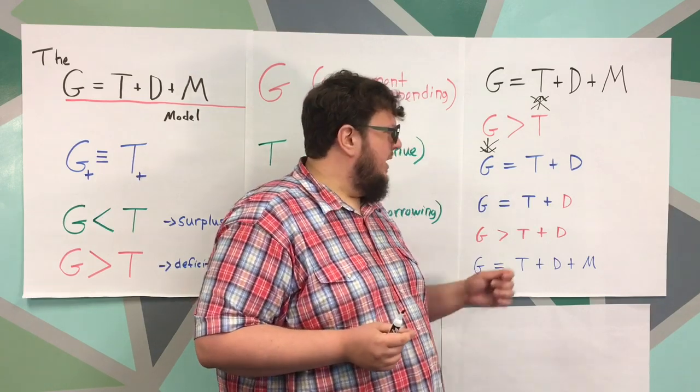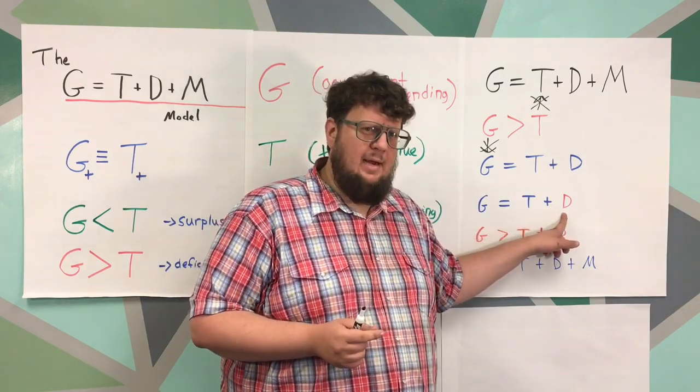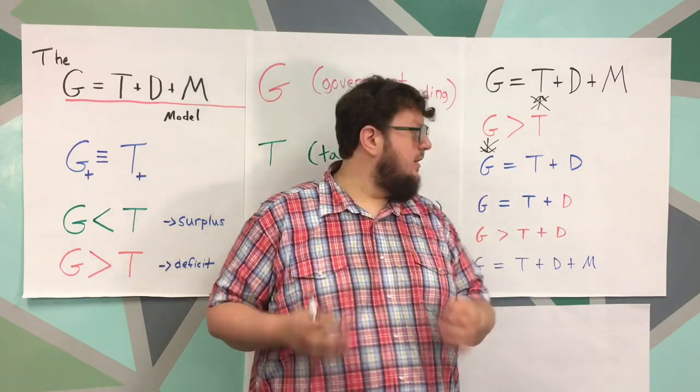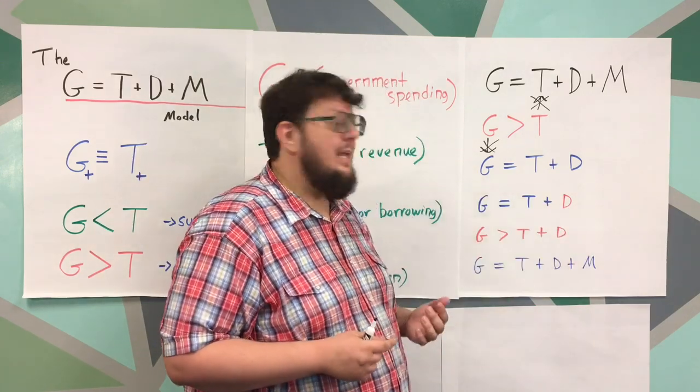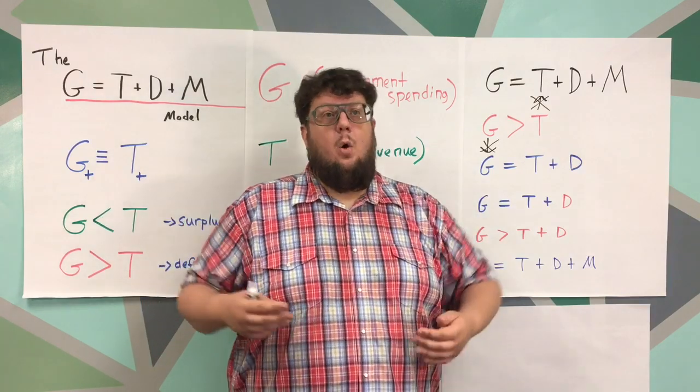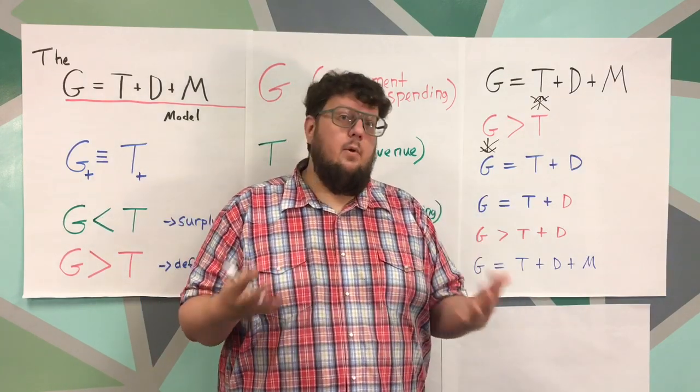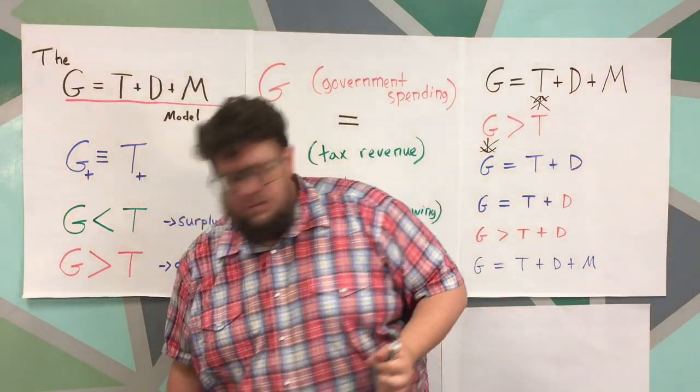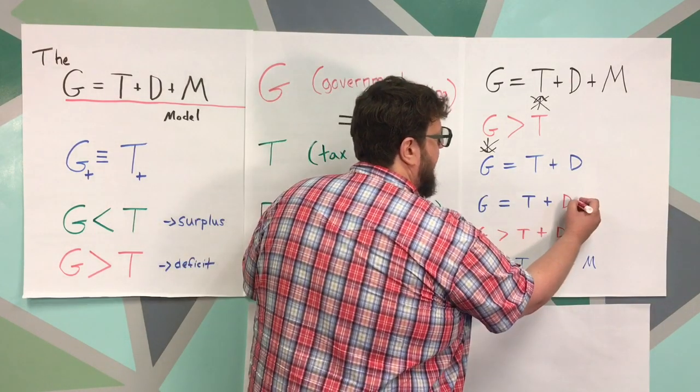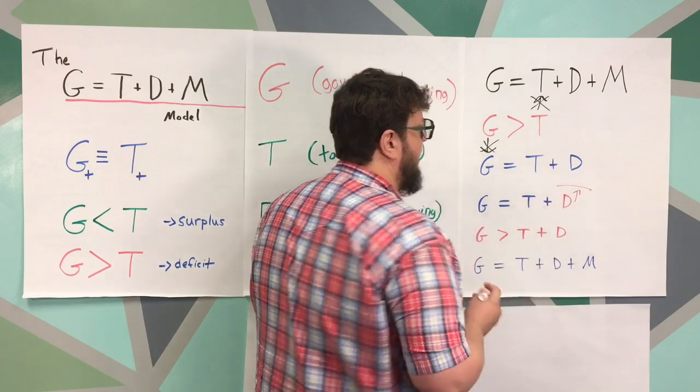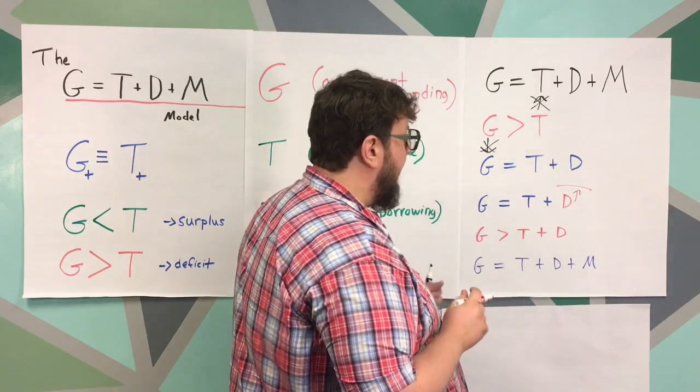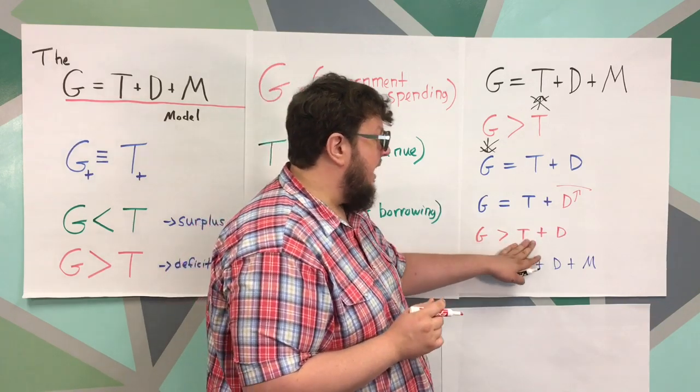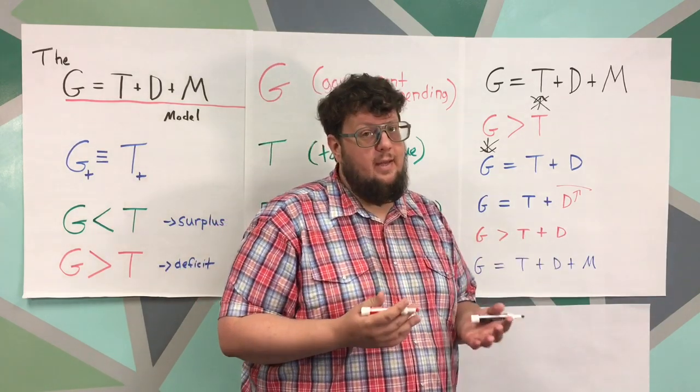But what happens if we get in a situation where we can't borrow money? This is where you start getting into a country in trouble, a country in crisis. You can't borrow any more money either because you borrowed too much before or you're borrowing too suddenly or there's something going on where people don't think you're going to be able to pay your debt off. In fact, we can even put like a bar here saying you're trying to raise your debt more, but you can't. There's some limit to it. Well, then you have to go down here. You're back in the same situation. Your government spending is greater than your tax revenue plus the borrowing you're doing.